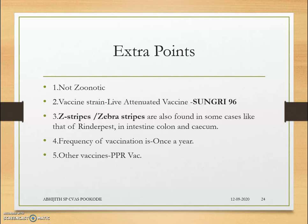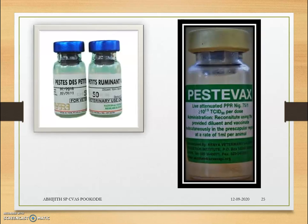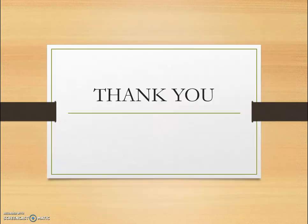Extra points: PPR is not a zoonotic disease. The vaccine strain used is a live attenuated vaccine — Sungri 96 — which has been asked in many PG entrance exams. Zebra stripes in the intestine are also found in rinderpest cases. Vaccination frequency is once a year. The PPR vaccine contains live attenuated PPR virus.